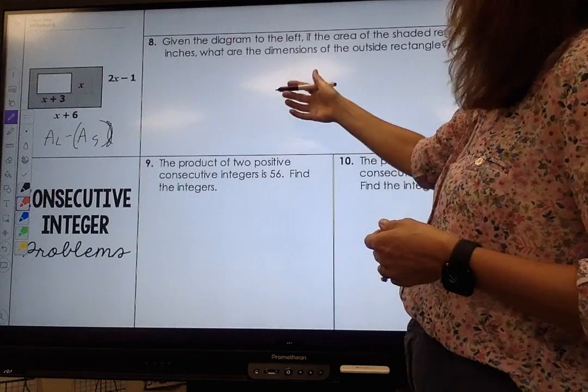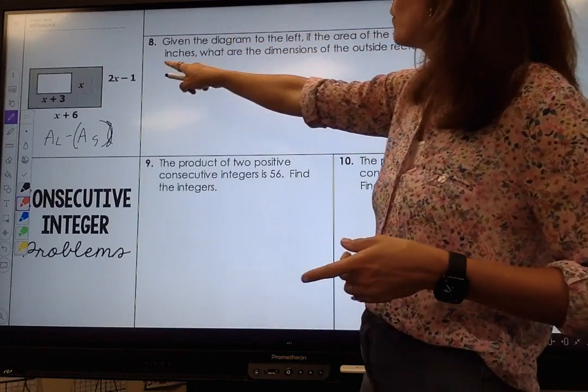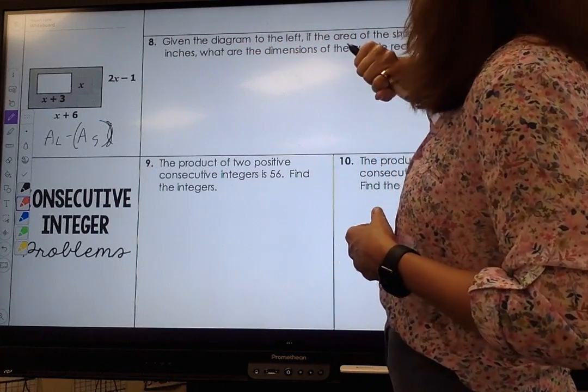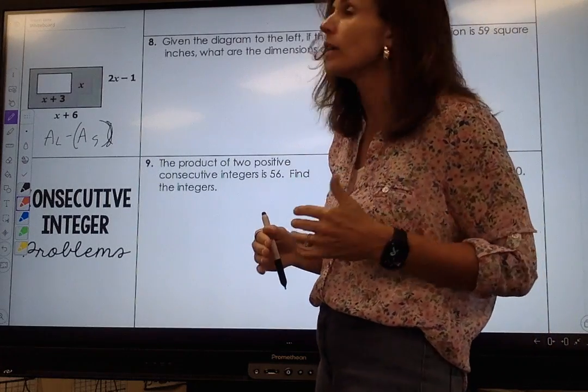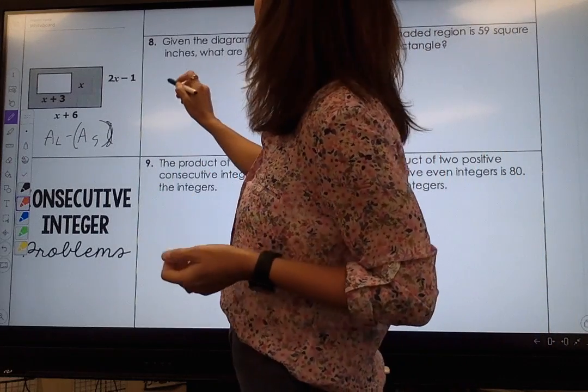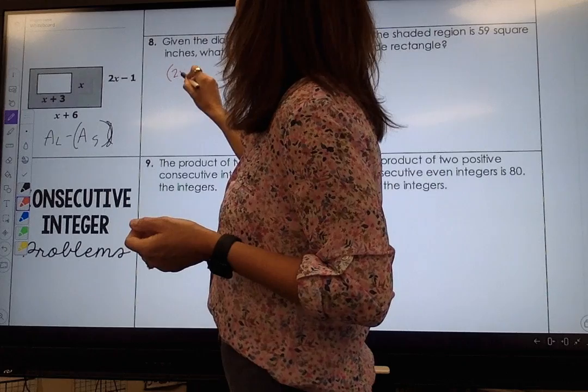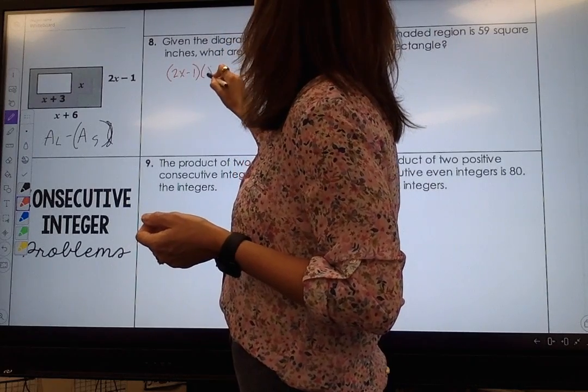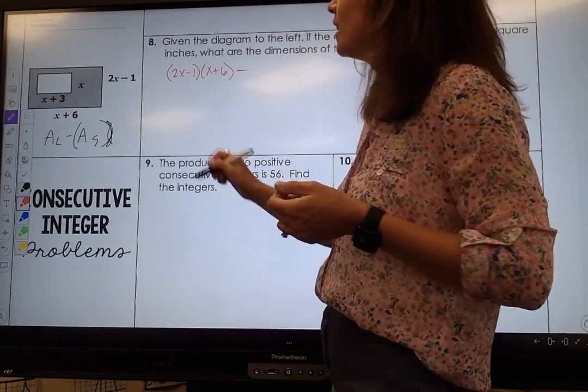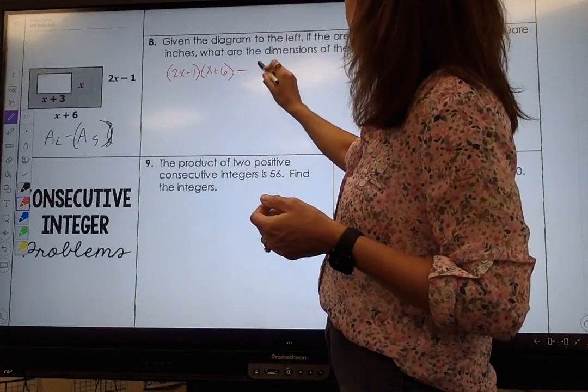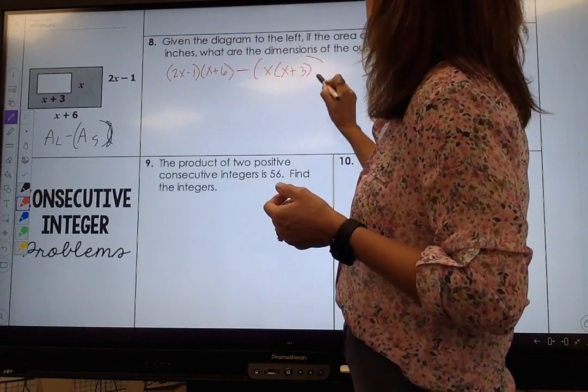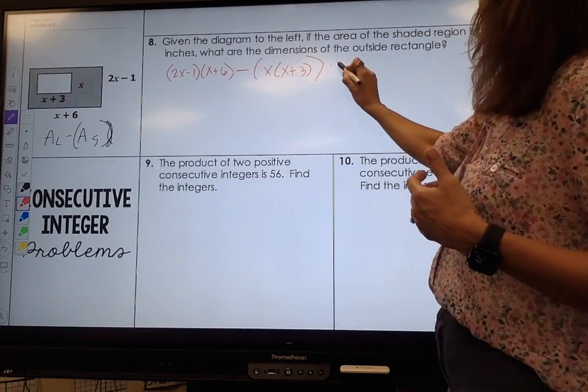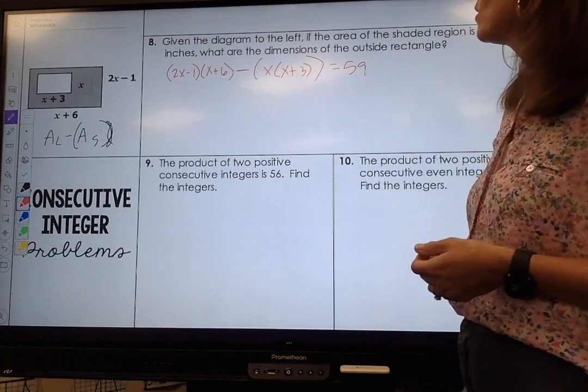If I want to find the area of the shaded region and it's telling me that the area is 59 square units, I take the area of the large which is 2x minus 1 times x plus 6 and I'm going to subtract the area of the small x times x plus 3, and all that is going to equal 59 square units.